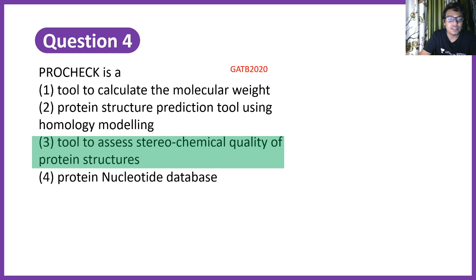So obviously you need to understand the term, what is PROCHECK? It's a common term. It's a tool just like BLAST to assess stereochemical quality of the protein structure. So again there would be some quality scores, there would be some identity scores, etc., which we would be talking in different videos.